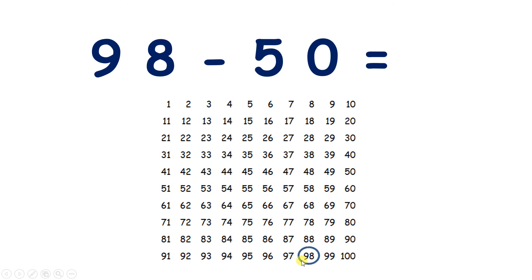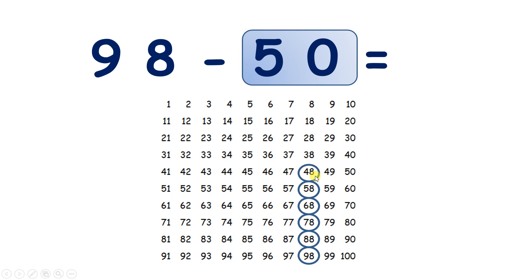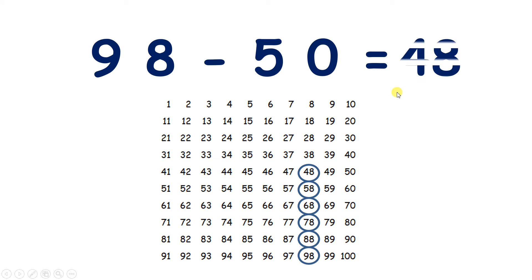So we find 98, and we're subtracting 50, which is 5 tens. So let's move up 1, 2, 3, 4, 5 places, and we get to 48. So 98 take away 50 is 48. We still have those 8 units, but we had 9 tens, we took away 5 tens, so we've now got 4 tens.